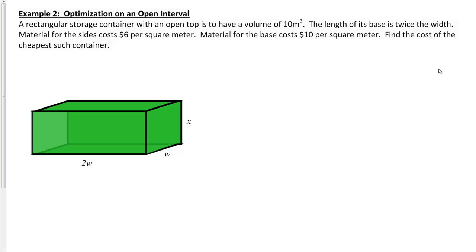On a previous slide you saw steps for solving optimization problems. We're going to follow those steps in this video. The first step is to read the problem carefully — we've already done that. Next, you want to draw a picture to summarize the information, then establish any relevant variables and name those variables. I already have a picture here. We have a rectangular storage container with an open top. We're told about its volume — what are the relevant variables here?